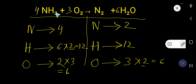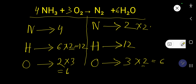Now balance nitrogen: four N on the left, two N on the right (in N₂). Multiply N₂ by two — place coefficient 2 before N₂, giving four nitrogen. This is the balanced chemical equation: 4NH₃ + 3O₂ → 2N₂ + 6H₂O.